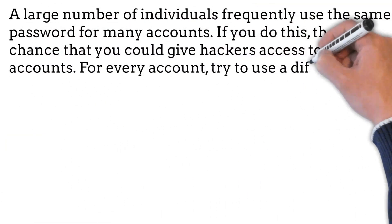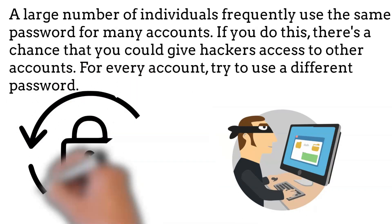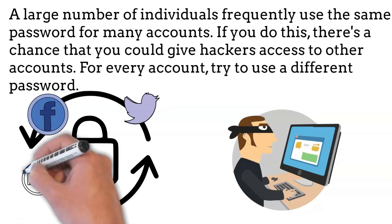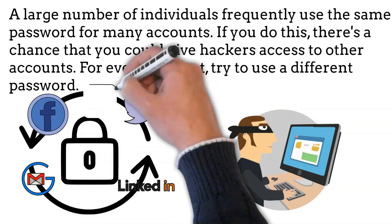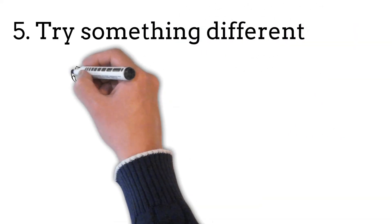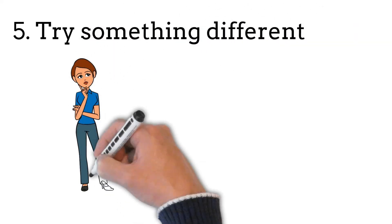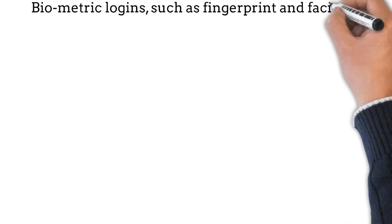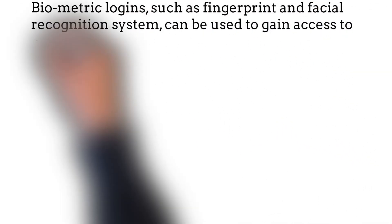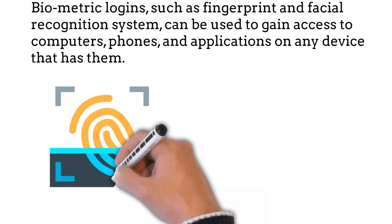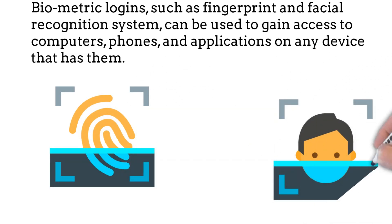A large number of individuals frequently use the same password for many accounts. If you do this, there is a chance you can give hackers access to other accounts — for every account, try to use a different password. The fifth step is to try something different: use technologies other than passwords, such as biometric logins like fingerprint and facial recognition, which can be used to gain access to computers, phones, and other applications on any device that supports them.